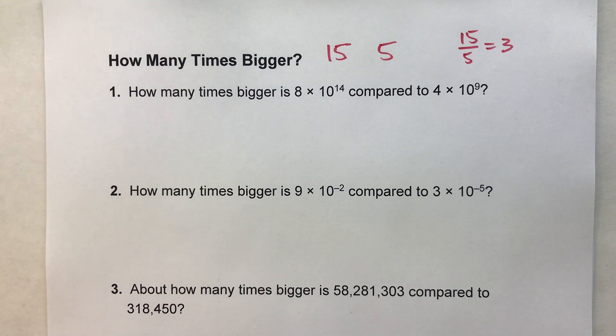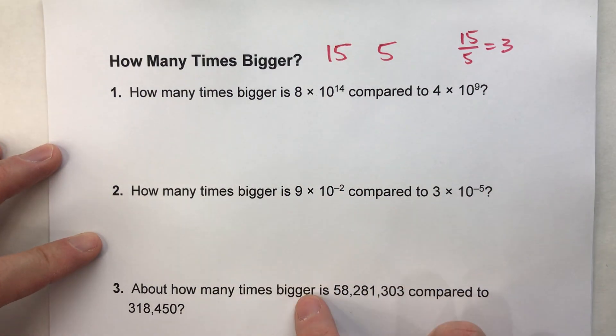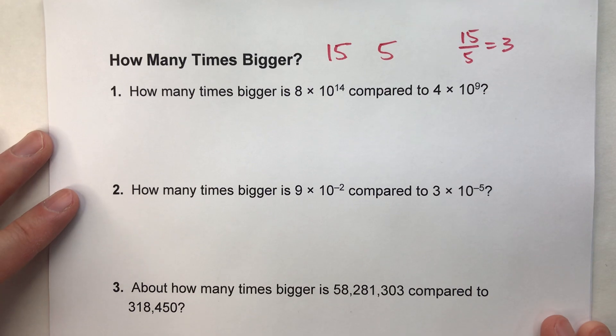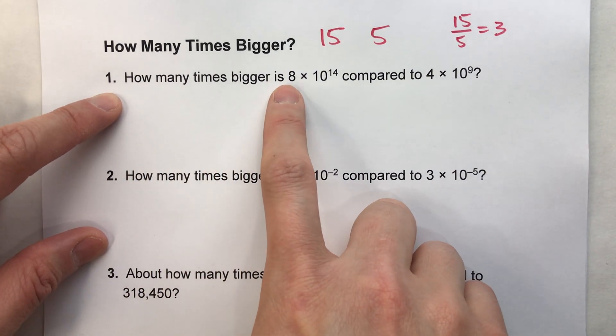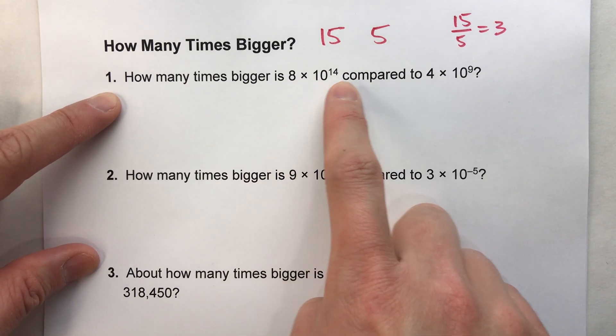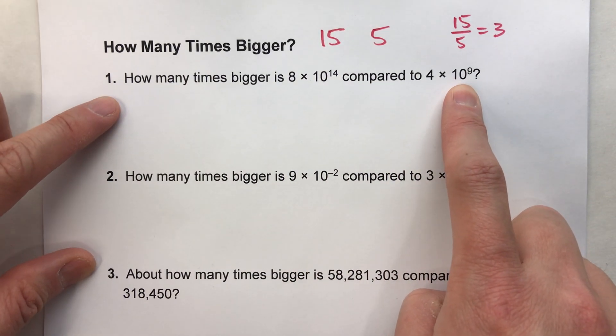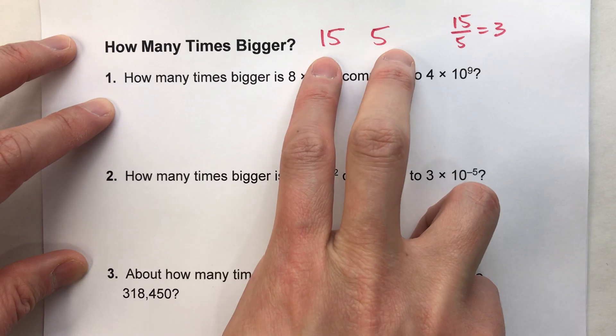The only difference is these numbers are a little more complex than 15 and 5. So let's go into them. Here we go. How many times bigger is 8 times 10 to the 14th power compared to 4 times 10 to the 9th power?